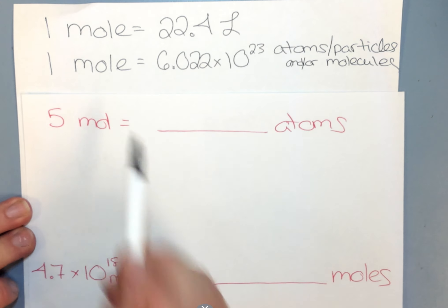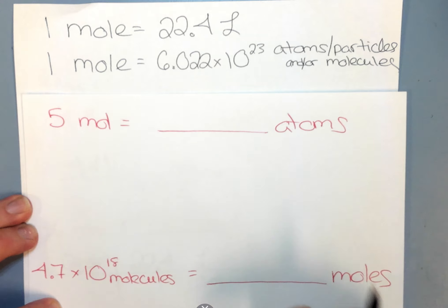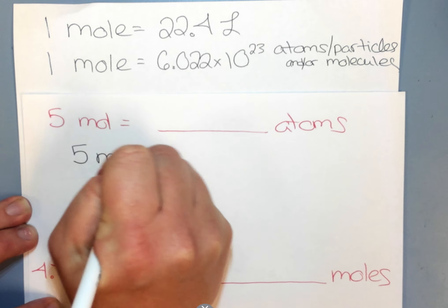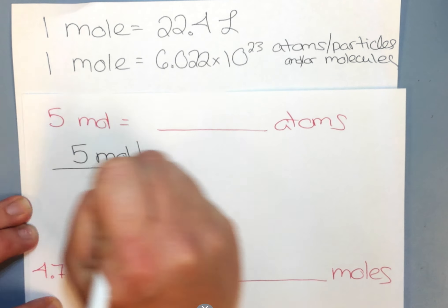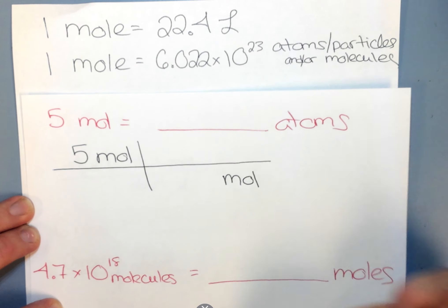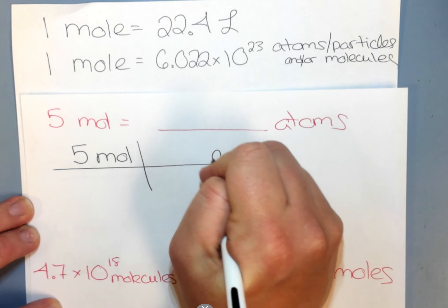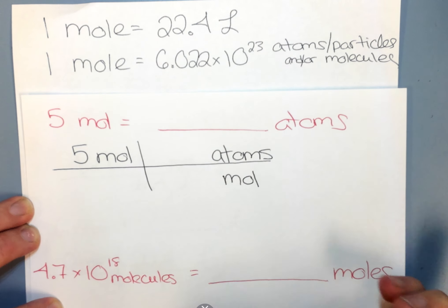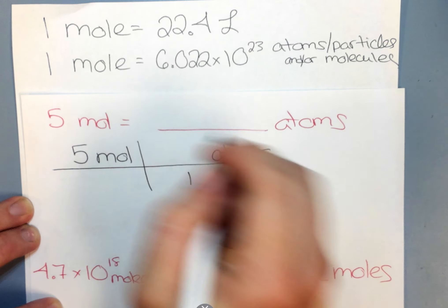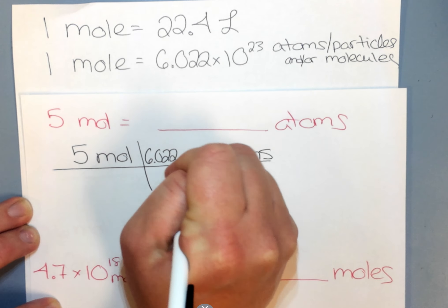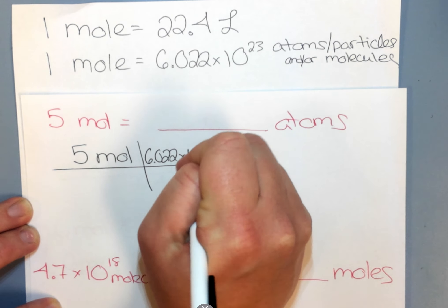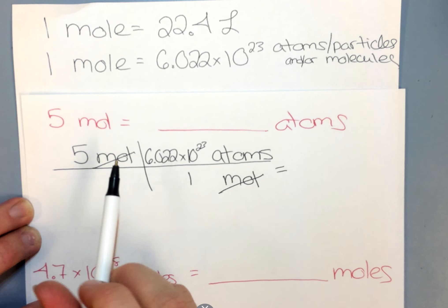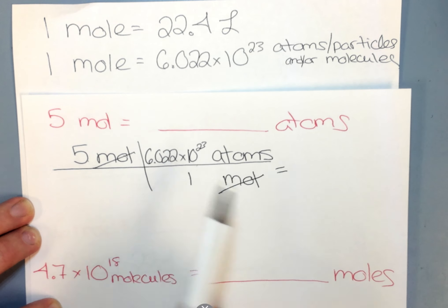If I have 5 moles, then I need to get to atoms. Once again, we start with our given in the numerator. If moles is up top, moles carries down to the bottom. And in this question, we're trying to get to atoms. So I'm going to put atoms on top. I just plug in my conversion factor. So 1 mole is 6.022 times 10 to the 23rd atoms. Moles cancel. And I'm left with my answer in atoms. I'm just simply multiplying across the top.